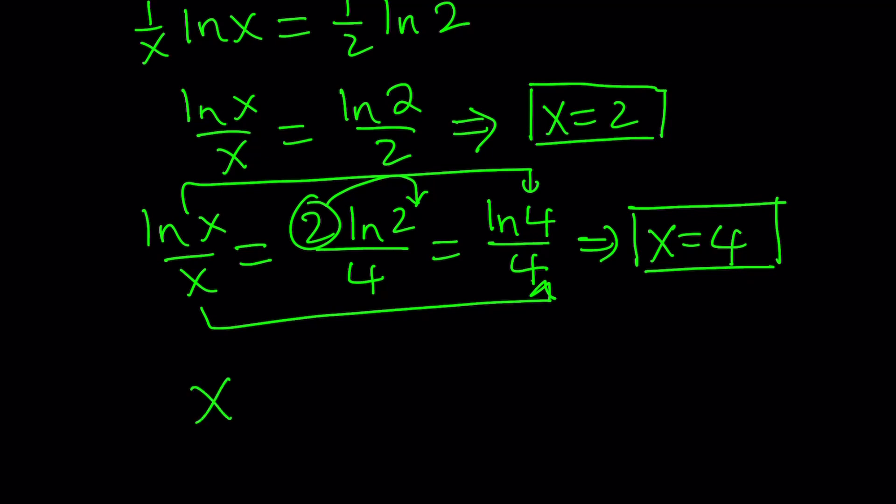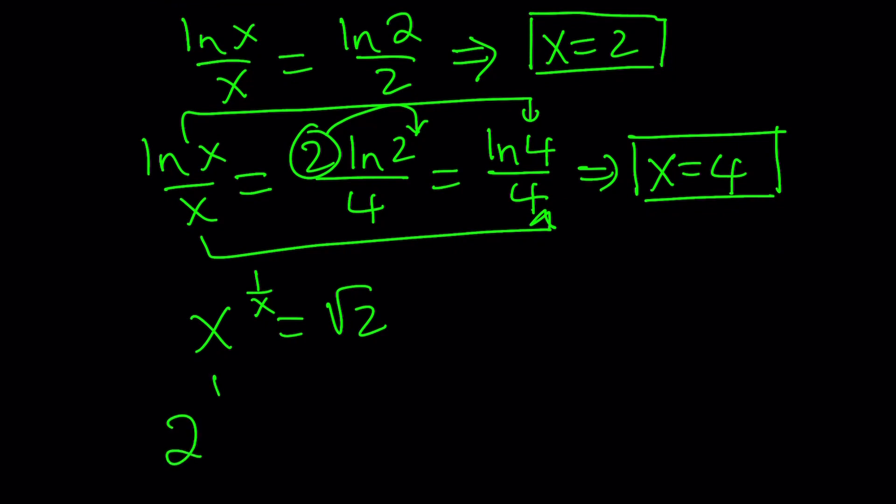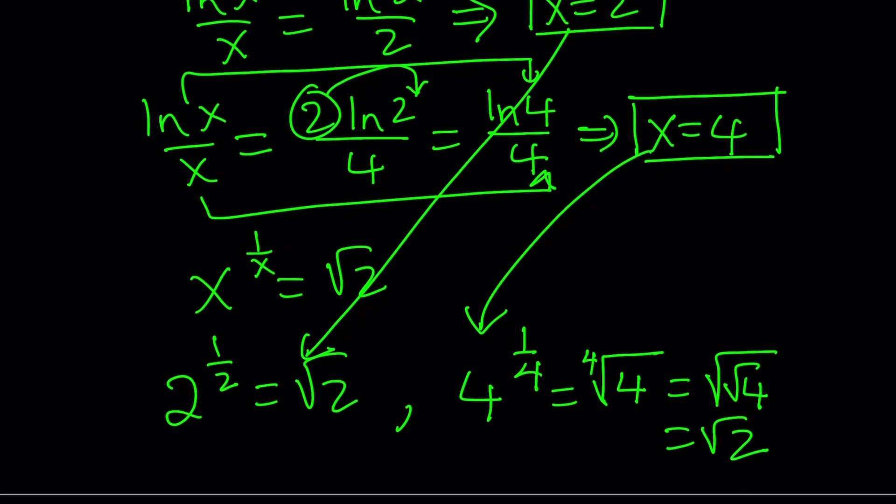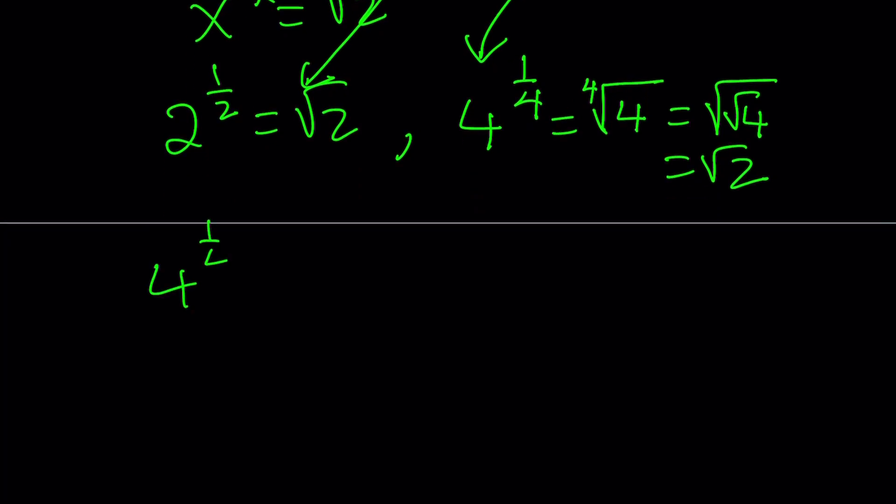What was the original problem? It was x to the power of one over x equals square root of two. Let's quickly check how the solutions work here. If x is equal to two, you get two to the power of one half. Obviously, two to the power of one half is the same thing as square root of two. If x is equal to four, then you get four to the power of one fourth. But four to the power of one fourth just means the fourth root of four, which can be written as the square root of the square root of four. From there, you can safely say that this is the same thing as square root of two. Or you can approach it differently: four to the power of one fourth can be written as two squared to the power of one fourth. The rule says you're supposed to multiply two times one fourth, which gives you two to the power of two fourths, which is the same as two to the power of one half, which is the same as square root of two. Our second solution works.